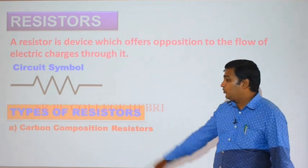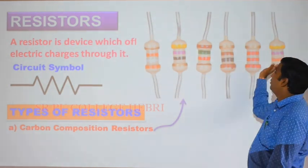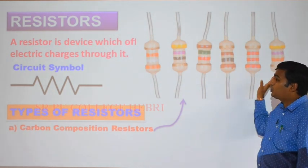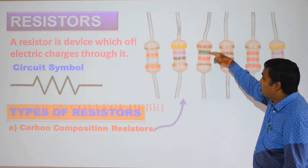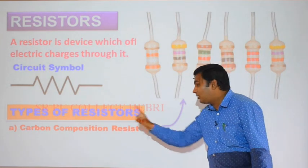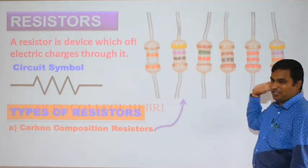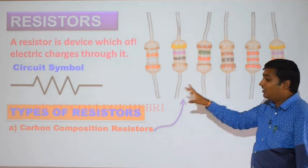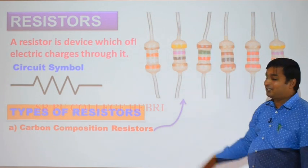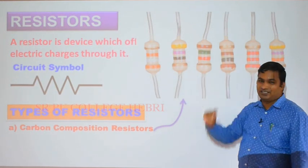Carbon composition resistors have four different color bands on them, which we call color bands. These are used in various circuits and the color coding helps determine the numerical value of the resistor. The second important type is wire-wound resistors, which come in two sub-types: the resistance box and the rheostat. A resistance box is used in second-year lab experiments.